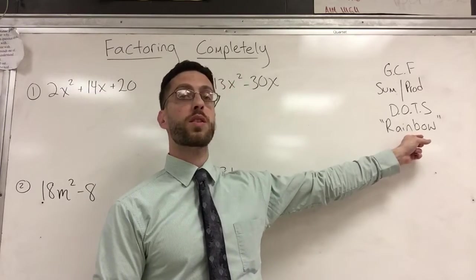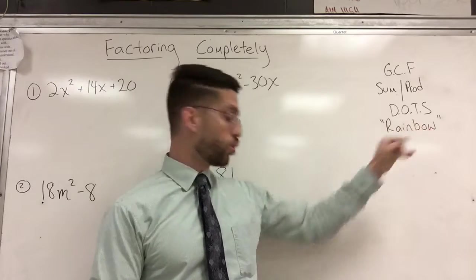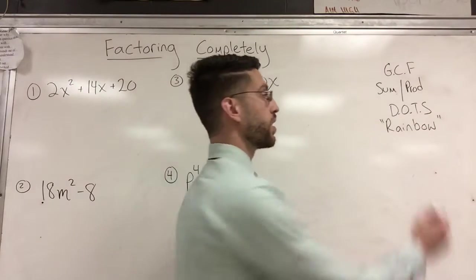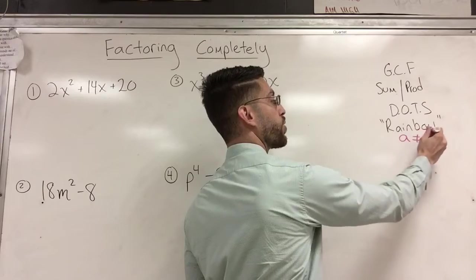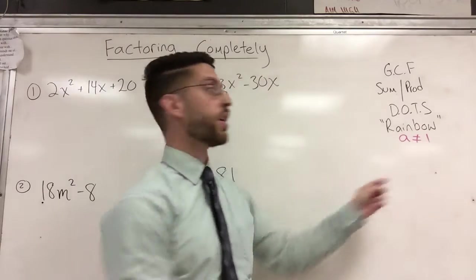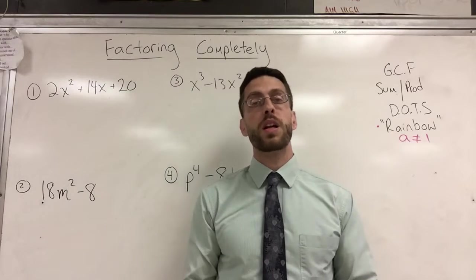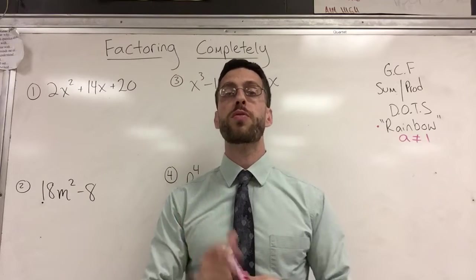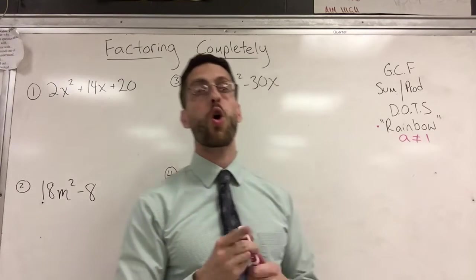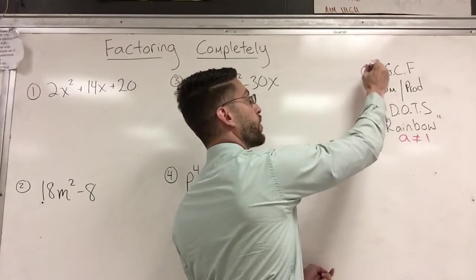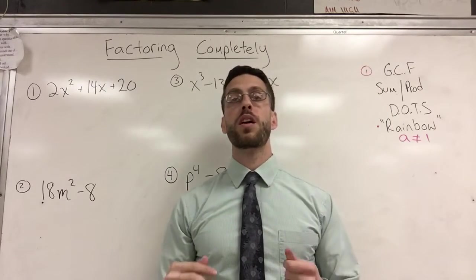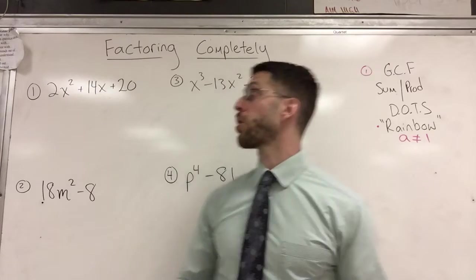And of course, my method called the rainbow method is used only when the leading coefficient of a trinomial is not equal to one. That's when I use the rainbow. So for this video, I'm not going to use the rainbow, but it is an option. What is your very first option when you're trying to factor? Always look for a GCF first because that makes the numbers in the problem smaller.